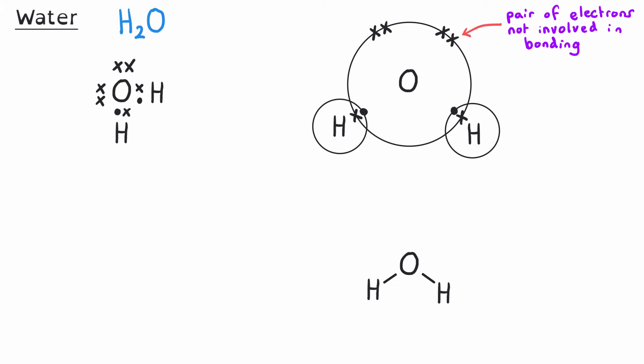The displayed formula for water shows two hydrogen atoms each connected by a line to a central oxygen atom. The ball and stick diagram represents oxygen as a red circle and the hydrogen atoms as white circles, each connected to the oxygen by a single stick.